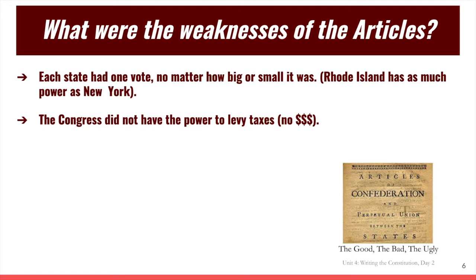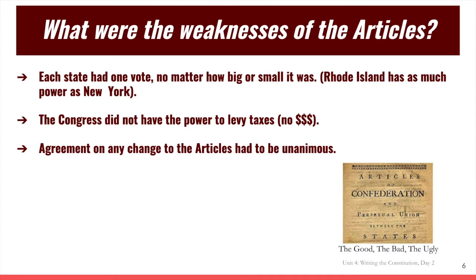The Congress did not have the power to levy taxes. As I said, if you can't levy taxes, you can't spend money, and if you can't spend money, you can't do much as the government of a country. If you wanted to change the Articles of Confederation, agreement had to be unanimous — all 13 states had to agree. The likelihood of that happening? Not so great. Imagine if you have 12 brothers and sisters and you all have to agree in order to make any kind of decision — I imagine that would be extremely challenging.